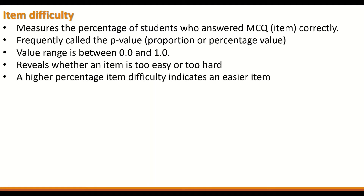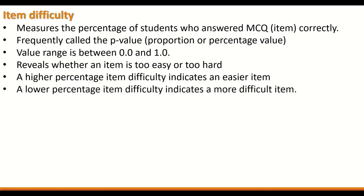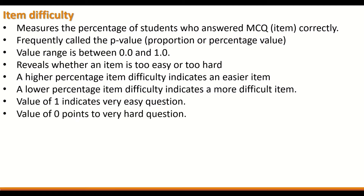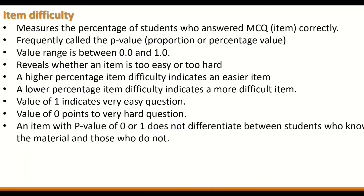A higher item difficulty percentage indicates an easier item, and a lower percentage indicates a more difficult item. A value of 1 indicates a very easy question, and a value of 0.2 indicates a very hard question. An item with a p-value of 0 or 1 does not differentiate between students who know the subject material and those who do not.